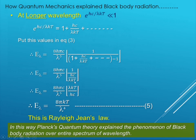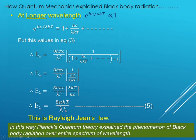Bringing lambda kT to the numerator gives: E_lambda = 8πhc/λ⁵ × λkT/hc. Here H and H cancel, one lambda cancels with λ⁵ leaving λ⁴, and c and c cancel, giving E_lambda = 8πkT/λ⁴. This equation is nothing but the Rayleigh-Jeans Law.